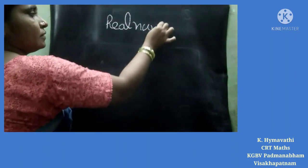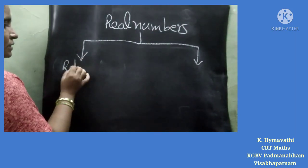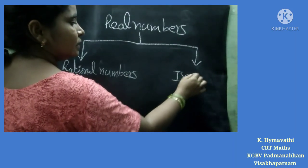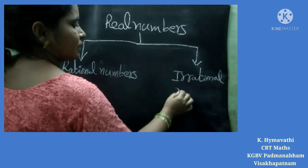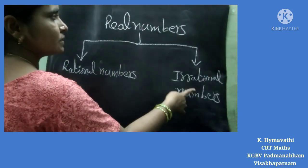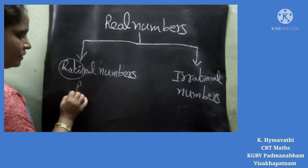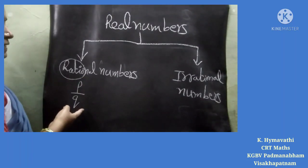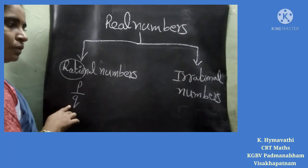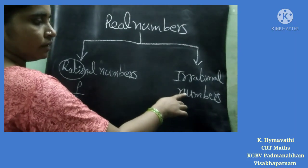Real numbers are the combination of rational numbers and irrational numbers. Rational numbers are numbers that can be expressed in the form P by Q, where P and Q are integers and Q is not equal to zero. Irrational numbers are numbers which cannot be expressed in the form P by Q.